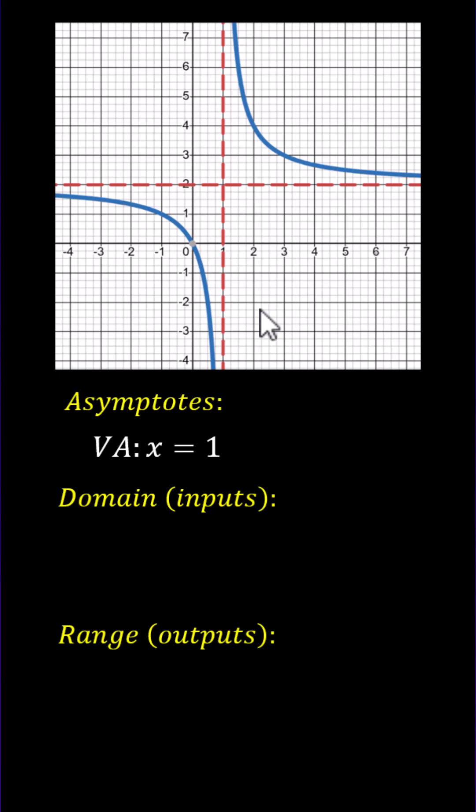A horizontal asymptote is a horizontal line that a graph approaches and may or may not cross. Notice the rational function approaches this horizontal line to the right and left. This horizontal line is y equals 2. This is the horizontal asymptote.